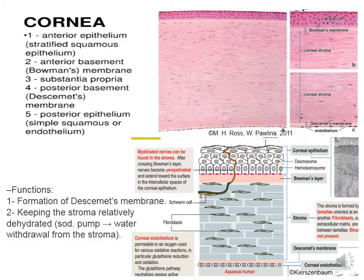The cornea is transparent and colorless. It consists of five layers: epithelium, anterior elastic lamina or Bowman's membrane, stroma (presented by connective tissue), posterior elastic lamina or Descemet's membrane, and endothelium.